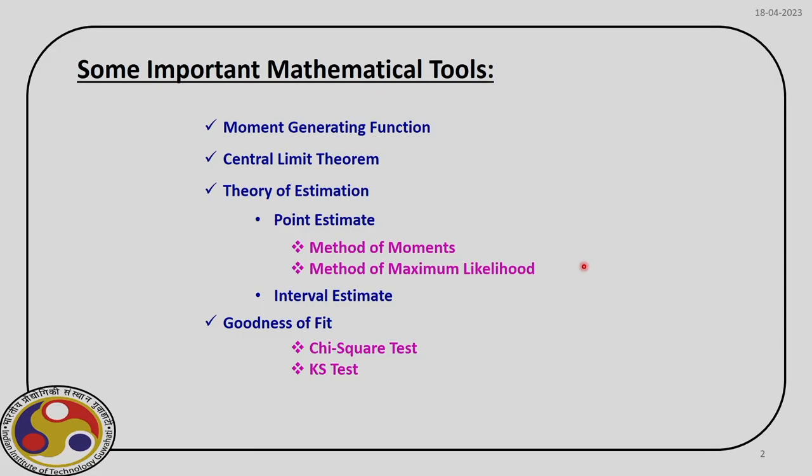Welcome back. Today we are going to discuss Theory of Estimation; we are in the module of Theory of Probability. If we quickly review the topics in this lecture series, we have already discussed Moment Generating Function and Central Limit Theorem in our last class. Today we are going to talk about Theory of Estimation, which has two parts: point estimate and interval estimate. Under point estimate we have Method of Moments and Method of Maximum Likelihood, and then we will have Goodness of Fit, which has two subtopics: Chi-square test and KS test.